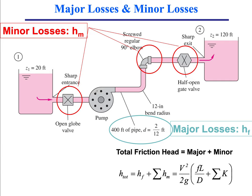In chapter six we have looked at piping systems including major friction losses associated with a straight pipe of length L and diameter D, fluid of viscosity mu, and also minor pipe losses associated with fittings such as valves, bends, elbows, entrances, and exit regions in the flow.